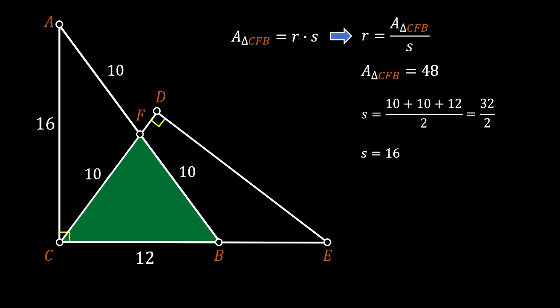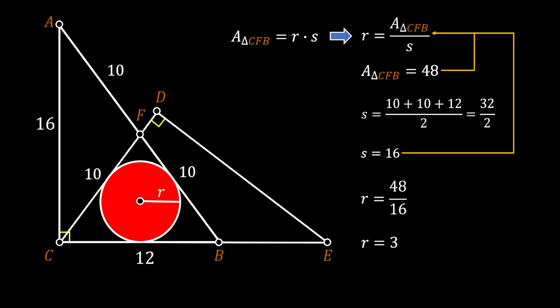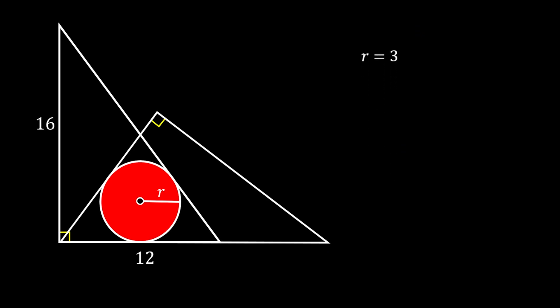Now, we will substitute our values back into the first equation for the radius, and we will get that radius is equal to 48 over 16, which means that the radius of our red circle must be equal to 3.